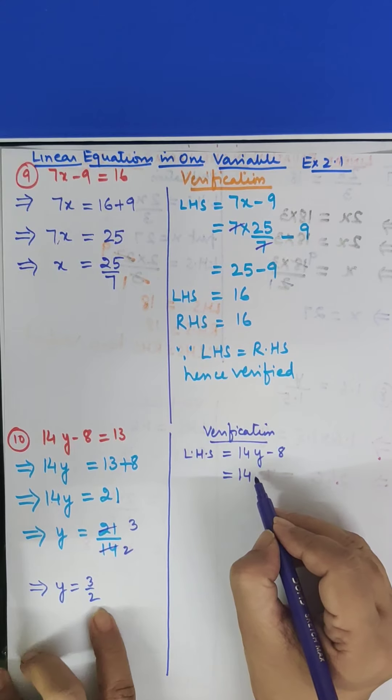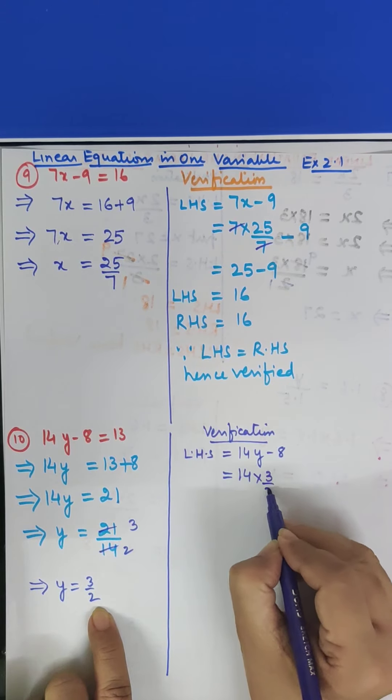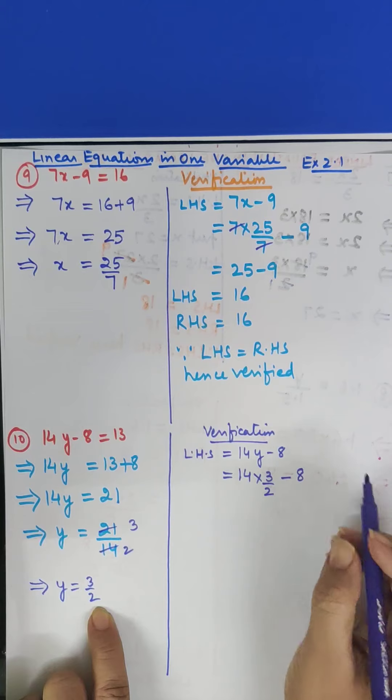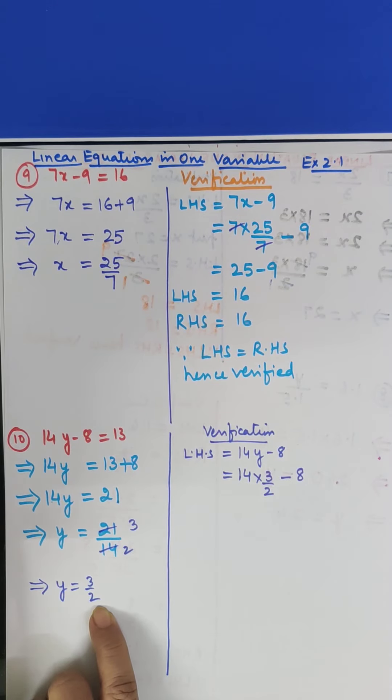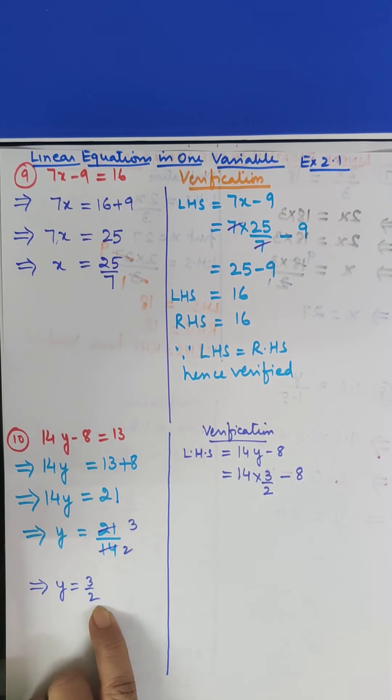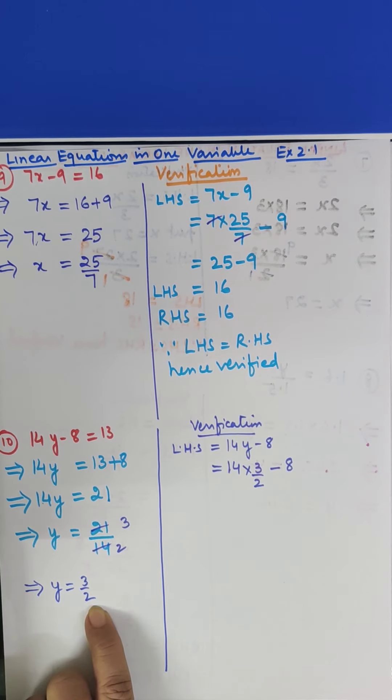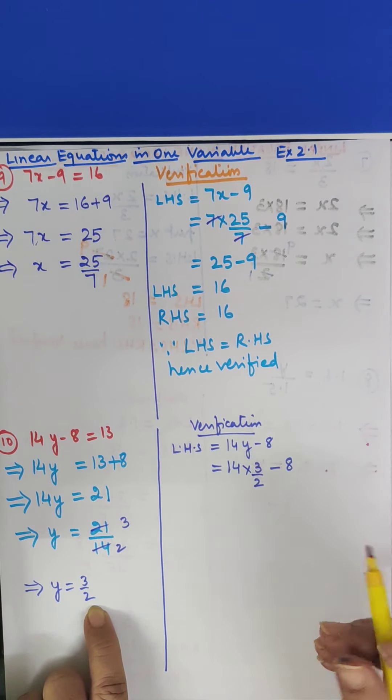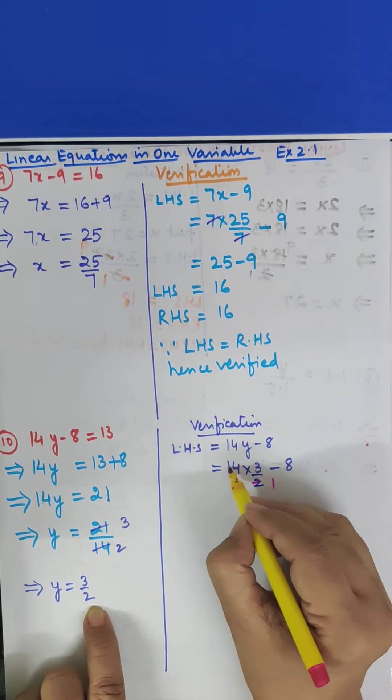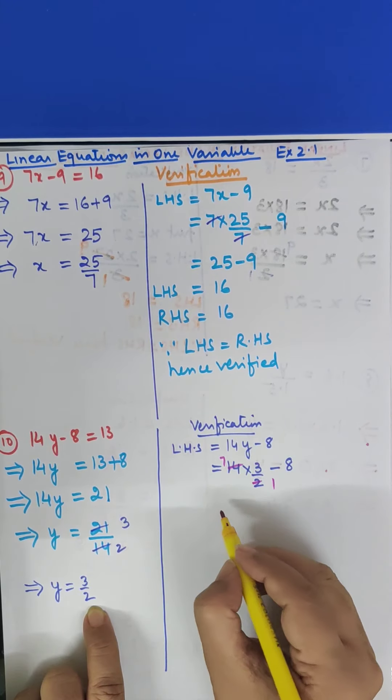14Y means 14 into Y, Y is how much? 3 upon 2 minus 8. Now you cancel. 2, 1s are 2. 2, 7s are 14. So what happened? 7 into 3 minus 8.